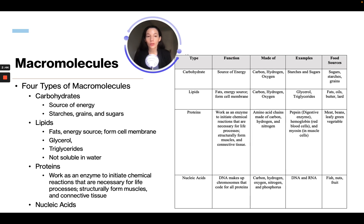Food sources include meat, beans, leafy greens, and vegetables. Then we have nucleic acids. These are DNA made up of chromosomes that code for all proteins. They are made of carbon, hydrogen, oxygen, nitrogen, and phosphorus. Examples are DNA and RNA, and we can find them in foods like fish, nuts, and fruits.